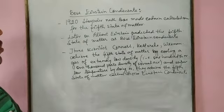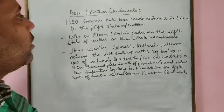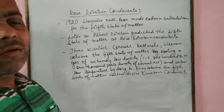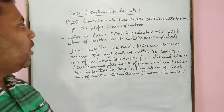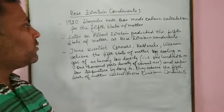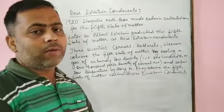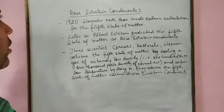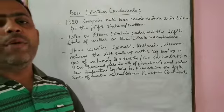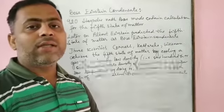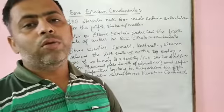Bose-Einstein condensate was proposed in 1920 by Indian scientist Satyendra Nath Bose, who made calculations for the existence of the fifth state of matter. Later, Albert Einstein predicted and named it Bose-Einstein condensate. Three scientists — Cornell, Ketterle, and Wieman — achieved the fifth state of matter by cooling a gas of extremely low density to super low temperature.